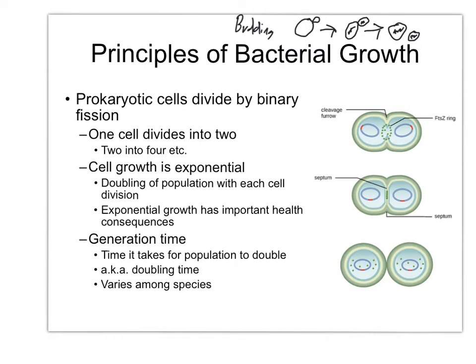Under ideal circumstances, given huge amounts of the best food, perfect temperature, and a perfect oxygen environment, E. coli can complete a generation time in about 20 minutes. A generation time is the amount of time it takes a newly divided cell to grow physically to the size it needs to be and then complete the whole process again. So the time from a fresh new cell to that cell reproducing is one generation time, or one doubling time.